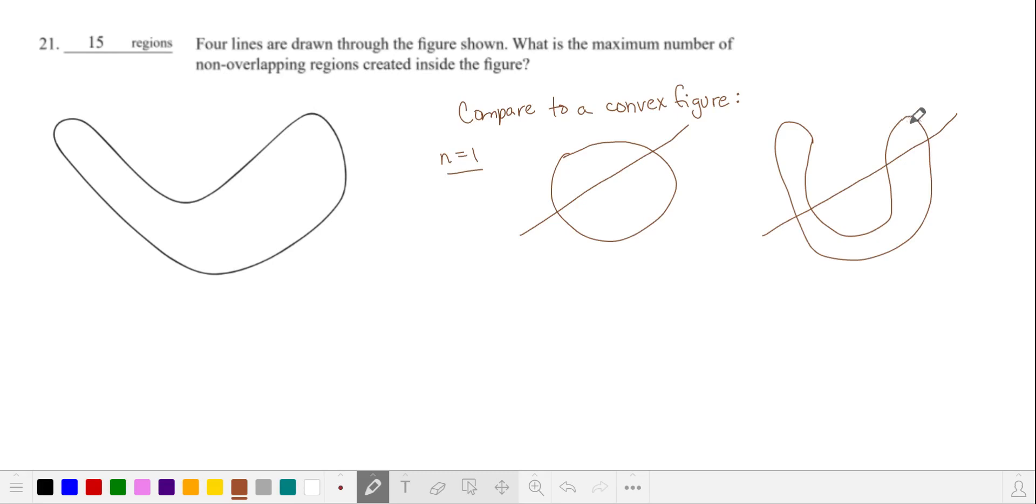When we draw a line through it, we see that we divide this figure into two pieces, one here and one here. And then as we extend the line to the other arm of this figure, we have a third piece. You can see that to maximize the number of non-overlapping regions, we can intersect both arms of this figure.